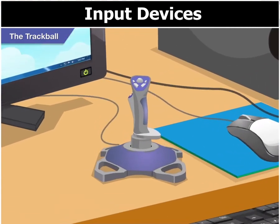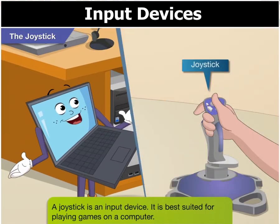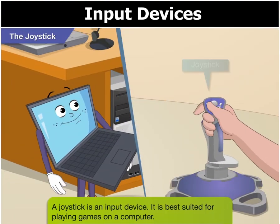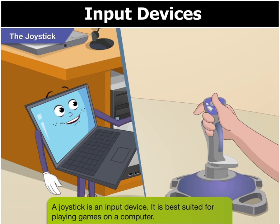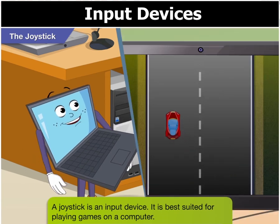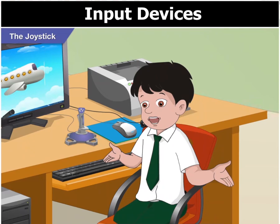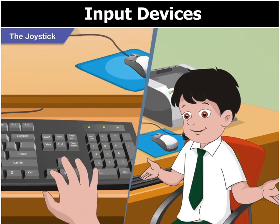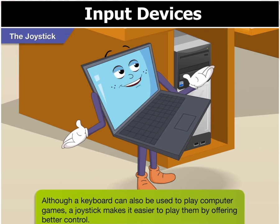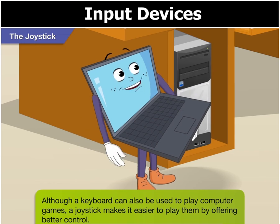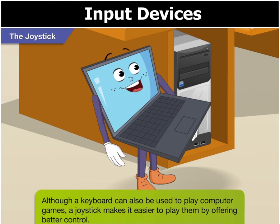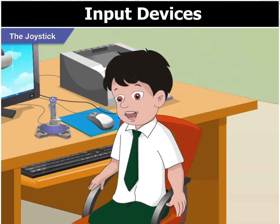Look, what is this here? That's a joystick. A joystick is also an input device. This device is best suited for playing games on a computer. But Toggle, I can play the games even using a keyboard. Sure, you can Goggle, but a joystick makes it easier to play the games by giving you better control. Oh, I see.